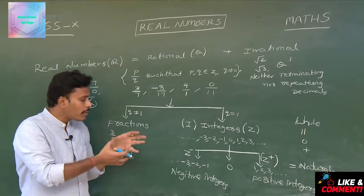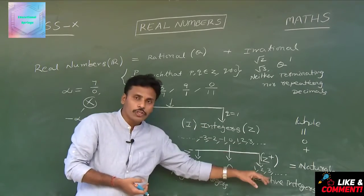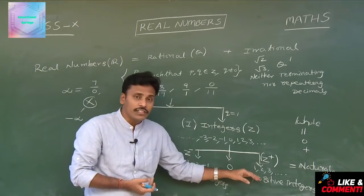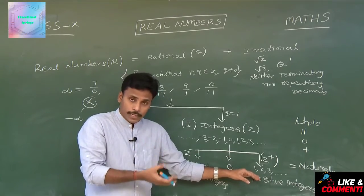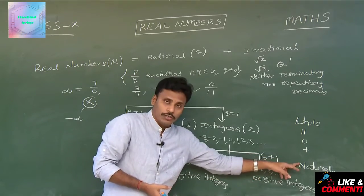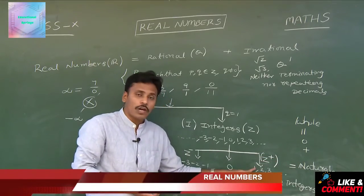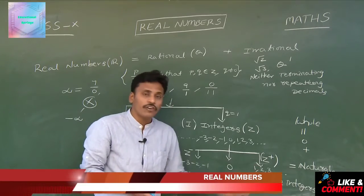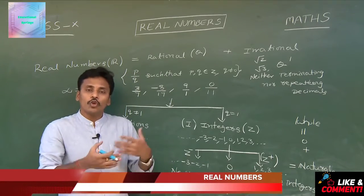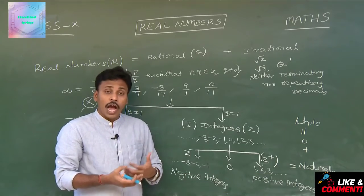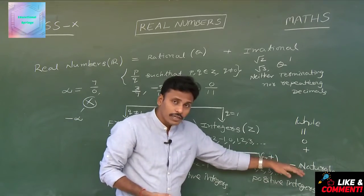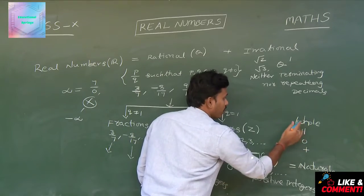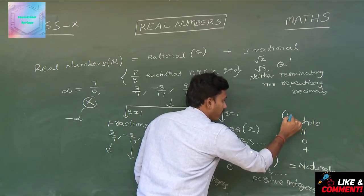Among integers, we have positive integers, 0, and negative integers. Positive integers are also mentioned as naturals — they start from 1, 2, 3, and so on, and we call these counting numbers. Those counting numbers are naturals.